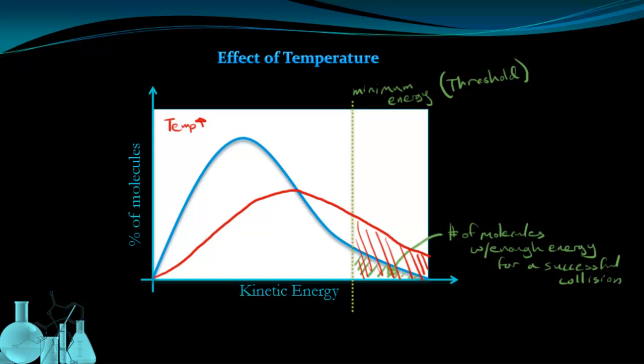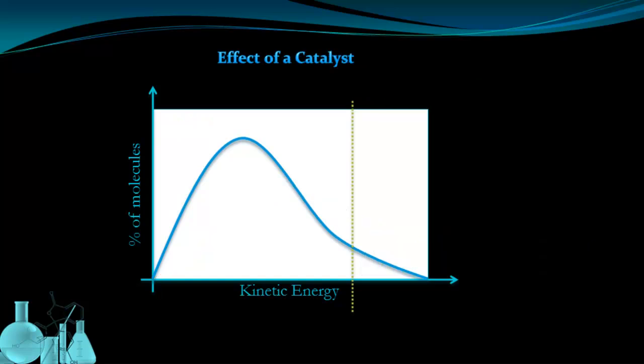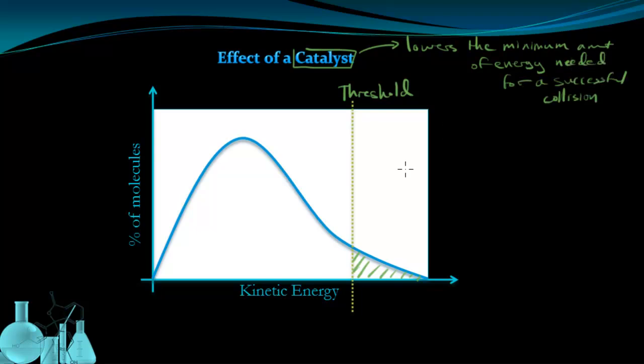Next, we're going to look at the effect of a catalyst using the same diagram. So again, I have my threshold energy here, and that means that this many particles can have a successful collision. Now the catalyst works by lowering the activation energy, which means it lowers the minimum amount of energy needed for a successful collision. Well, on a kinetic energy diagram, that minimum amount of energy is the threshold energy.